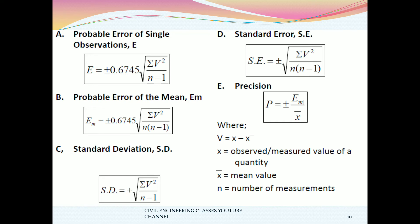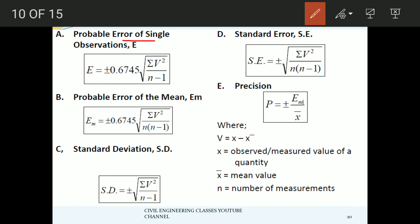The probable error for a single observation is equal to plus or minus 0.6745 times the square root of sigma v-squared divided by n minus 1, where v is the difference between the observed value and the average value. For the mean value, the probable error Em is equal to plus or minus 0.6745 times the square root of sigma v-squared divided by n into n minus 1.